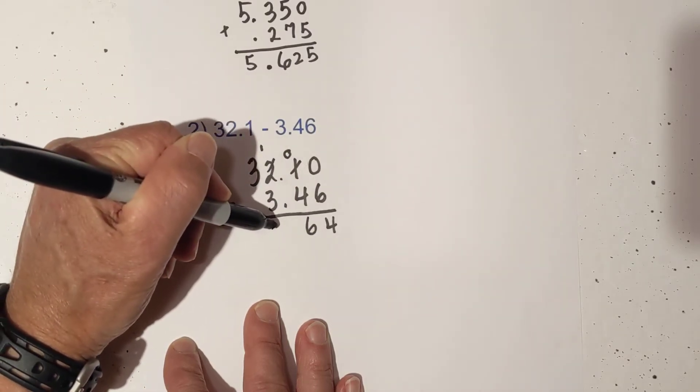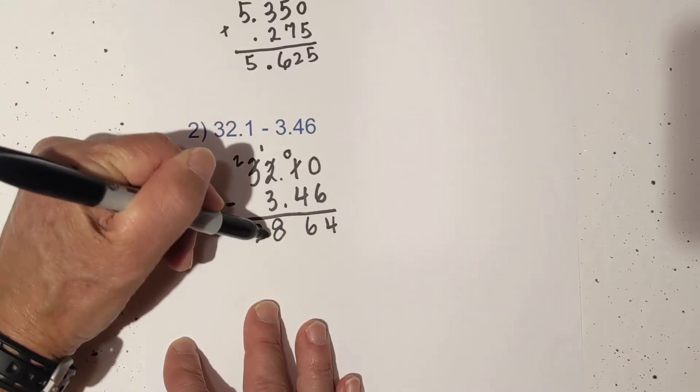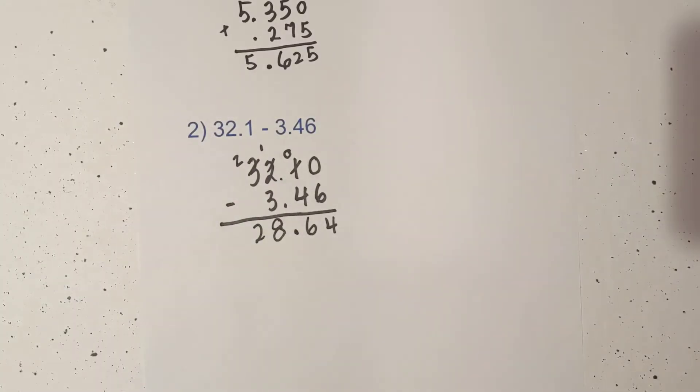so that will be a 1. That becomes an 8. I had to borrow 1 from there, so that becomes a 2. Bring down the decimal: 28.64. Let's move on to a couple more.